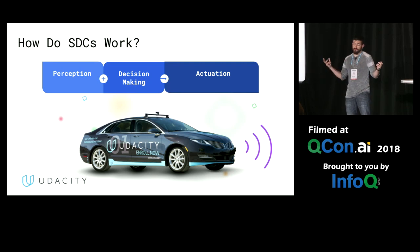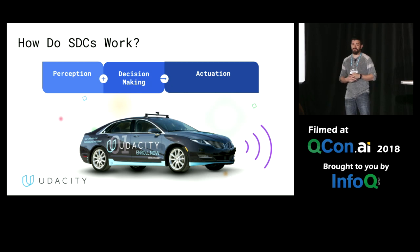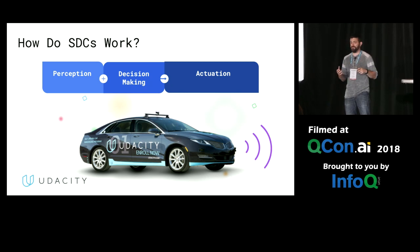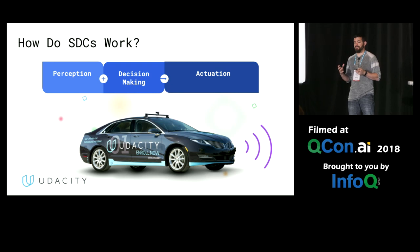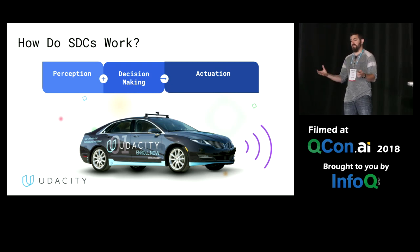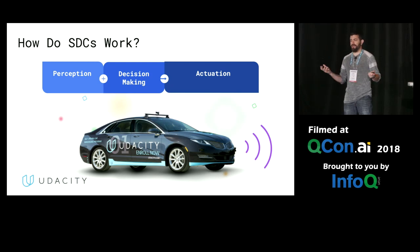So how do self-driving cars work? Without going into too much detail, it's basically like every robotic system. You have perception — your sensors — you combine that with the decision-making, and then at the end you're moving the car, so you have the actuation. At a very high level, that's how self-driving cars work.